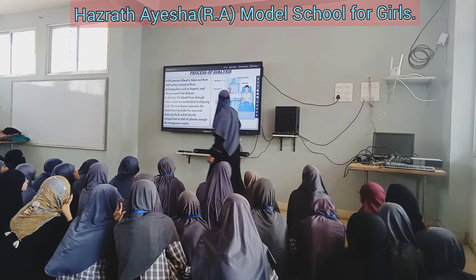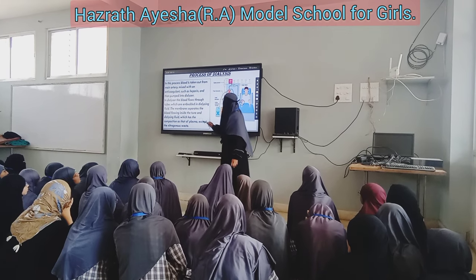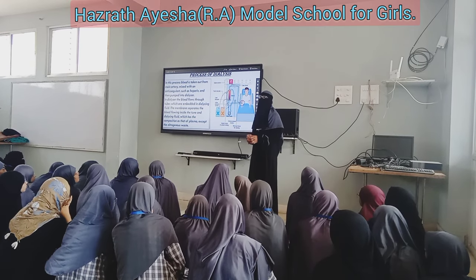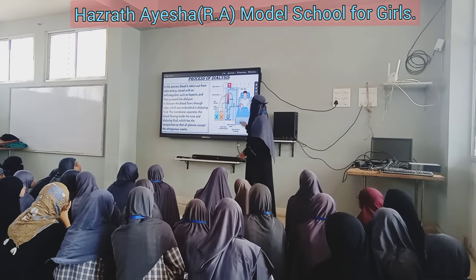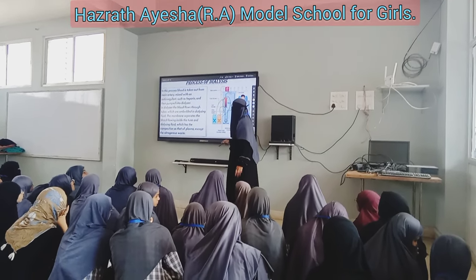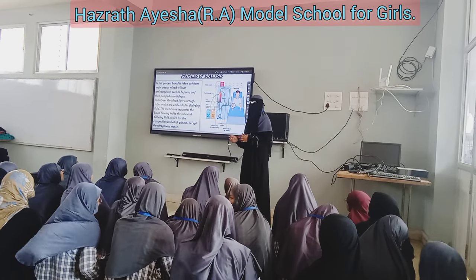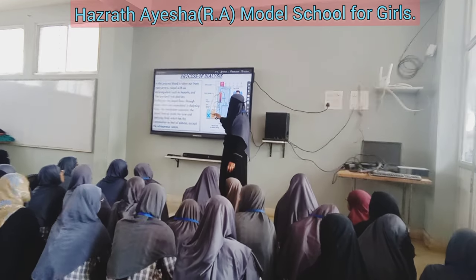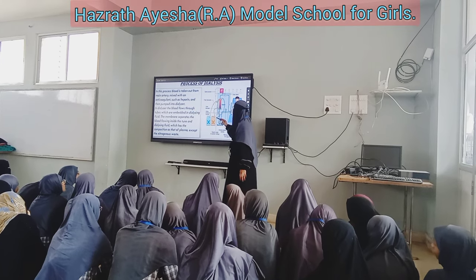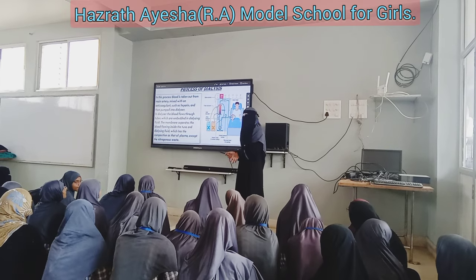The blood is then accompanied into the dialyzer. Inside the dialyzer, blood flows through tubes called lumen, which are embedded in dialyzing fluid. The dialyzer contains a semi-permeable membrane which separates the blood inside the tube from the dialyzer fluid.